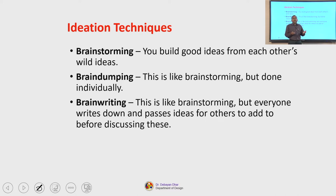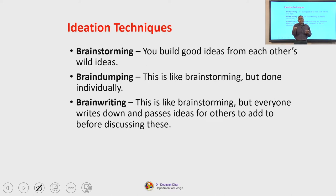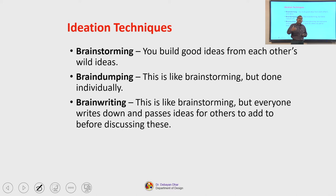Third is brain writing, which is like brainstorming but everyone writes down ideas and passes them for others to add to before discussing. For example, you take a card, write your idea, and pass it to a colleague. They look at the idea, add something to it or come up with new ideas, then pass it to the next person. This way, ideas evolve from one team member to another — that is brain writing.